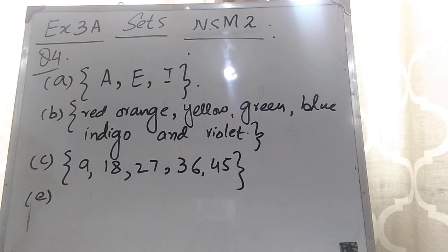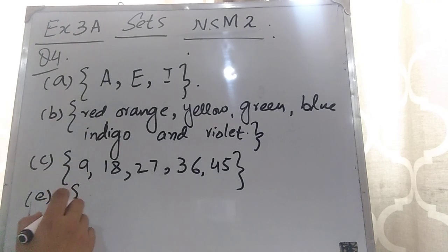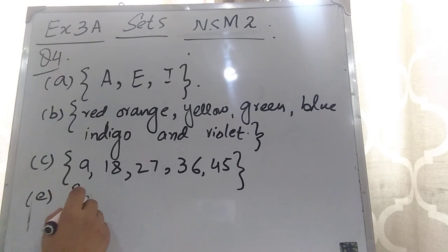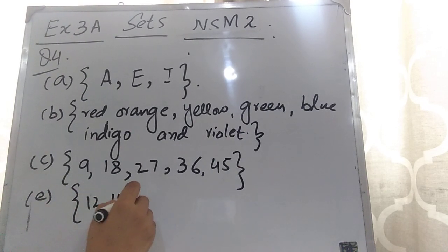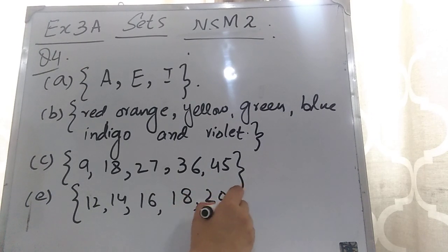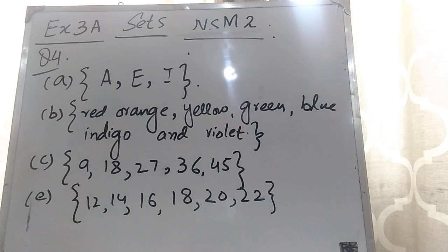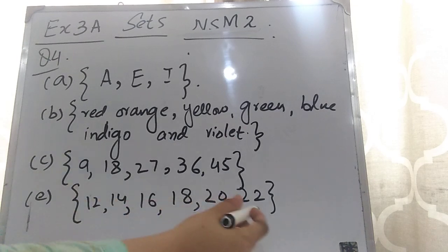Part D you can do yourself. Now part E: even numbers between 10 and 20. You have to write down the even numbers between 10 and 20. After 10, they are: 12, 14, 16, 18, 20. I will not write 22 because they are saying even numbers between 10 and 20. So these are the even numbers in that range.